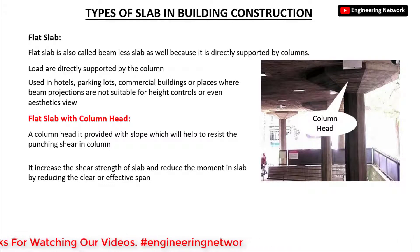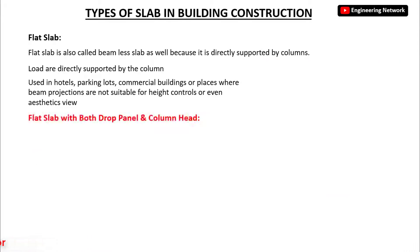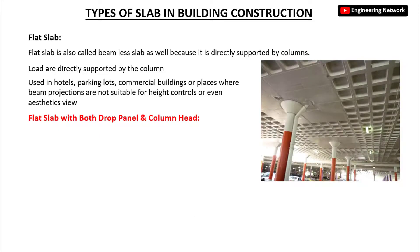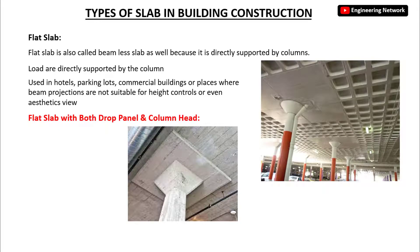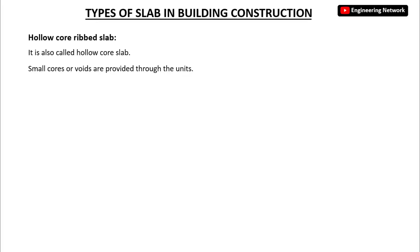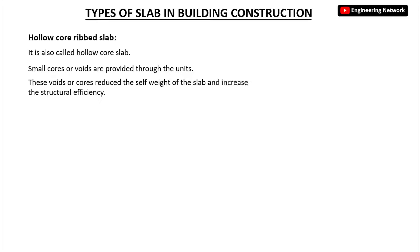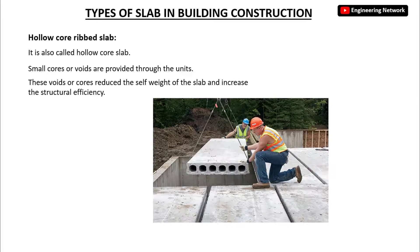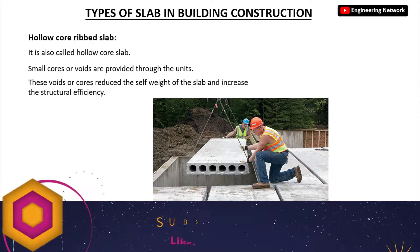The column head also increases the shear strength of the slab and reduces the moment in the slab by reducing the clear or effective span. The third type of flat slab is a flat slab with both a drop panel and a column head. The next type is the hollow core ribbed slab, also called a hollow core slab. In such slabs, small cores or voids are provided throughout the units. These voids or cores reduce the self-weight of the slab and increase the structural efficiency, as you can see on your screen.